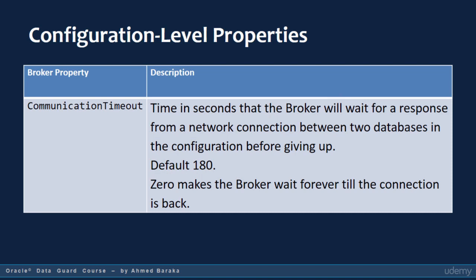We will discuss in more detail the most important broker properties you may need to consider in real-life scenarios. We will talk about a configuration-level property: the communication timeout property. This property defines the time in seconds that the broker will wait for a response from a network connection between two databases in the configuration before giving up. If no response is received within this period, the broker will consider the database unavailable. The default value is 180 seconds, equivalent to three minutes.